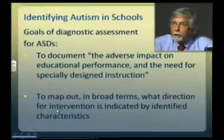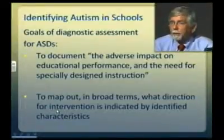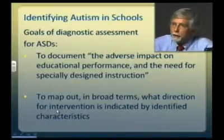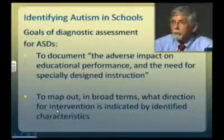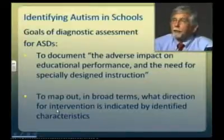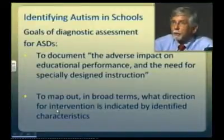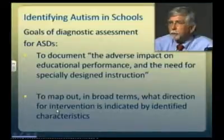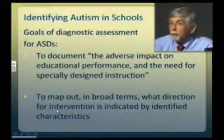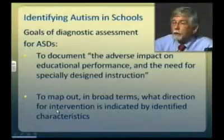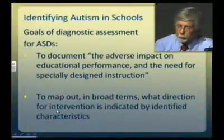The team must document the presence of an impairment — that this child has an impairment of the kind associated with autism. Next, the diagnostic assessment team must document the adverse impact on educational performance and the need for specially designed instruction. Finally, it is the team's task to map out, at least in broad terms, the direction for intervention as indicated by the identified characteristics — not writing the IEP, but indicating the kinds of interventions this child is likely to benefit from.